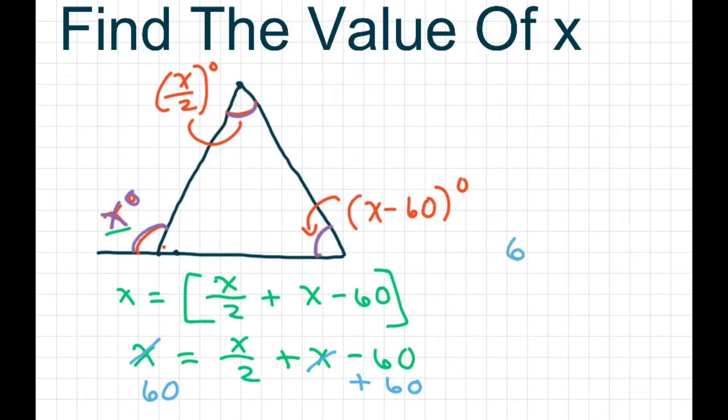So you're going to get 60 equals x over 2. Multiply both sides by 2 and you get 120 equals x.